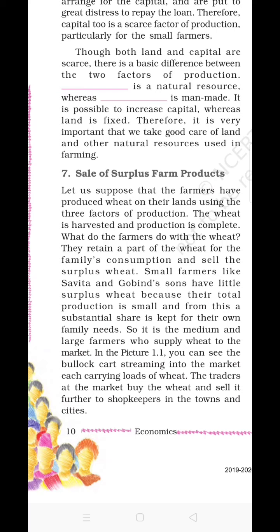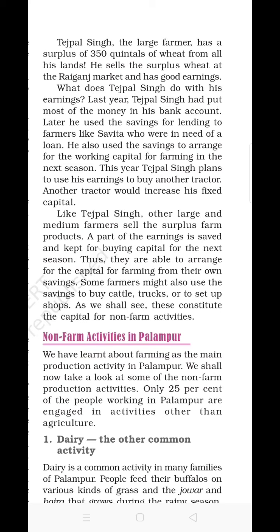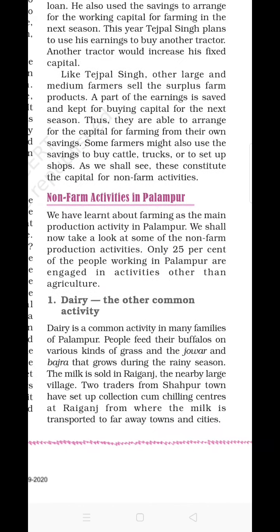Farmers who have only small patches of land are unable to sell surplus — they produce just enough to eat by themselves. In contrast, Tejpal Singh had 350 quintals of wheat. He sold that wheat in the market and earned money from it. With that money he was able to buy different capital assets: tractors, cattle, and other things essential for farming.